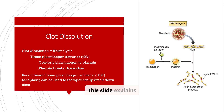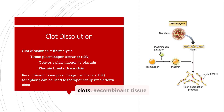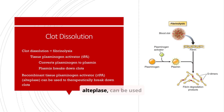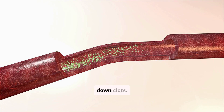This slide explains clot dissolution, also known as fibrinolysis. Tissue plasminogen activator (TPA) converts plasminogen to plasmin, which then breaks down clots. Recombinant tissue plasminogen activator (rTPA), also known as alteplase, can be used therapeutically to break down clots.